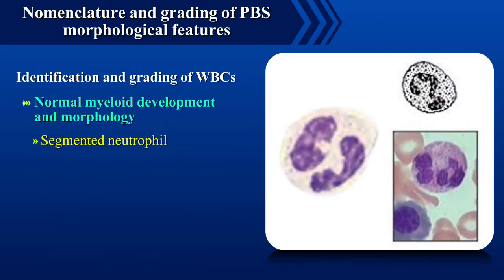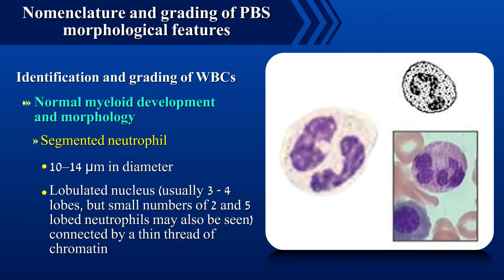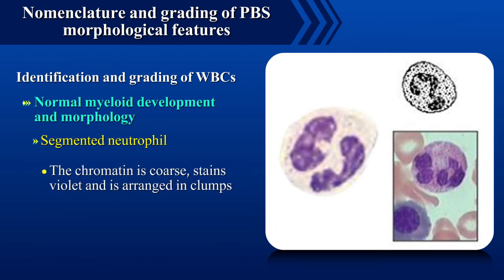Segmented neutrophil is 10 to 14 microns in diameter with a lobulated nucleus usually with 3 to 4 lobes, though 2 and 5 lobe neutrophils may also be seen. The lobulated nucleus is connected by a thin thread of chromatin. The chromatin is coarse, stains violet and is arranged in clumps.